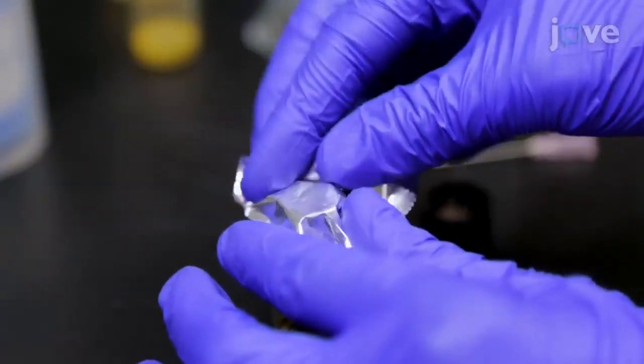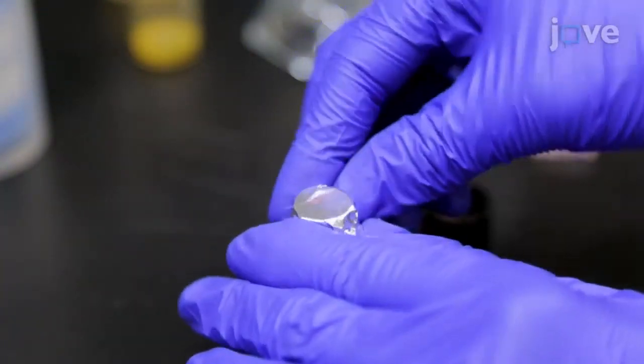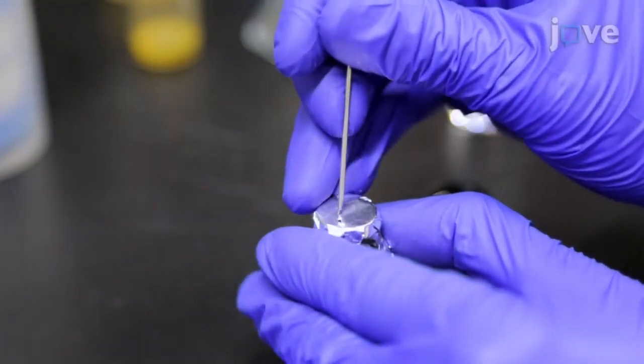Then, cover the vial with aluminum foil and punch several holes in the foil with a needle.